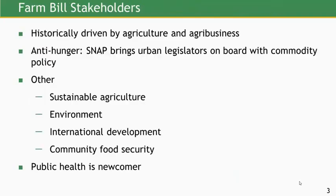The second thing to consider is who are the key stakeholders with the greatest interest in shaping the Farm Bill. Historically, the Farm Bill was truly a farm bill, so the major interests were agriculture and eventually agribusiness. Starting around the 1970s, the anti-hunger community became an active stakeholder as food stamps—now SNAP—became part of the Farm Bill. That brought urban legislators on board. You have urban legislators supporting commodity policy, and agriculture advocates supporting SNAP and anti-hunger efforts. It's been an extremely successful alliance, partly around bringing down the cost of food.